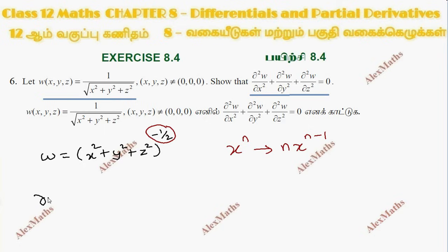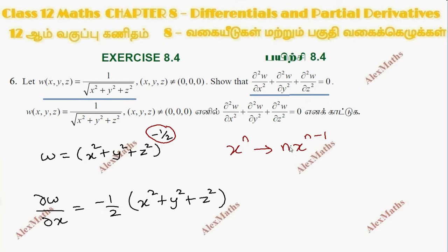This is equal to zero. We have to write ∂w/∂x. So n is minus 1 by 2. x power: x is equal in the whole term (x² + y² + z²) to the power n. Minus 1 is minus half minus 1 — that is the inner term chain rule. So, into x² is 2x. The y term and z term are constant, so they cancel.